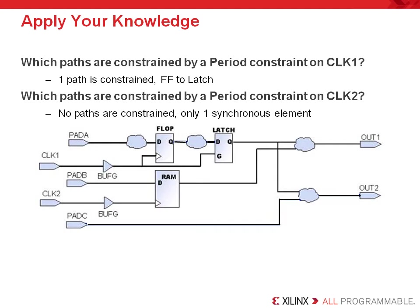Now we want to give you a chance to test your knowledge of the basic global constraints and what paths they cover. This is a very simple example containing two clock nets. If you were constraining this design, you would probably use a period, an offset in, and an offset out for each clock domain. The first clock has two synchronous elements, and the period constraint will cover one path from the flip-flop to the latch. The second clock has only one synchronous element, so a period constraint on this clock would not actually constrain any paths, because the tools do not have a path from a source to a destination synchronous element.